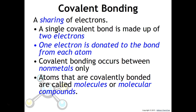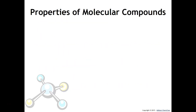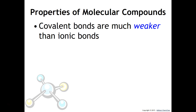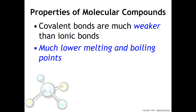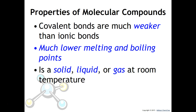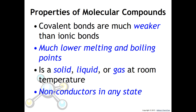Atoms that are covalently bonded are different than crystals. Remember, crystals is the term we use to describe ionic compounds. With covalently bonded compounds we're talking about molecules or molecular compounds. Covalent bonds are typically much weaker than ionic bonds and have much lower melting and boiling points. Molecular compounds are solids, liquids, and gases at room temperature, and they do not conduct electricity or heat in any state.